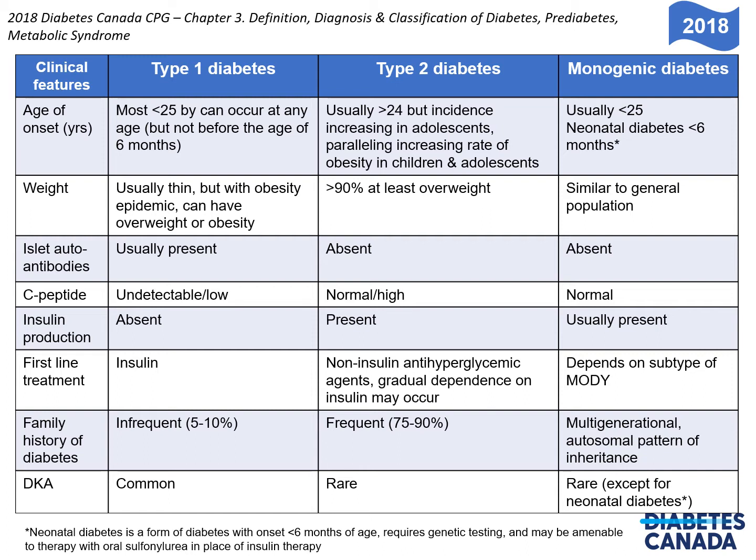Type 2 diabetes is often diagnosed in older people, but because of the increase in prevalence of obesity, it is more commonly being identified in adolescents and young adults. Obesity is very common in people with type 2 diabetes, but weight can vary similar to the general population in those with type 1 and monogenic diabetes. Type 1 diabetes, usually being autoimmune, does often have the presence of antibodies to the islets, and C-peptide levels are often very low or undetectable, whereas in type 2 diabetes they may be high, particularly after the initial glucotoxic phase.